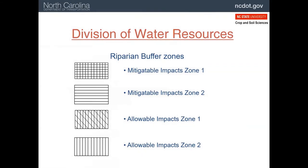The North Carolina Division of Water Resources also has symbols for work in riparian zones one and two. In this case, mitigable means that NCDOT will repair areas off the project in trade for these impacts, while allowable means no off-site repairs are needed.